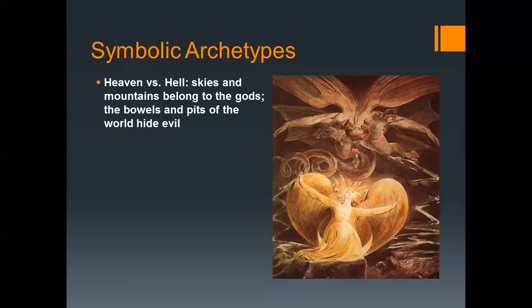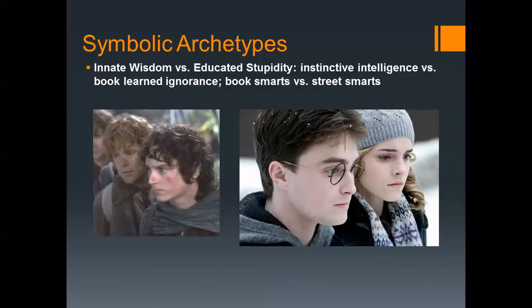Heaven versus hell: anytime you see skies and mountains in a story or movie, versus the bowels of the earth or a hell-type setting, you should think the skies and mountains belong to the gods, and the pits represent evil. There's a representation of the duality of those things. Then there's innate wisdom versus educated stupidity — think street smarts versus book smarts. One example is Harry Potter and Hermione. Harry Potter has instinctive intelligence and just knows what to do, whereas Hermione is more book smart and always has to study and research. Both are useful in stories.